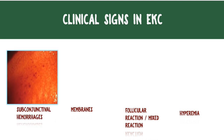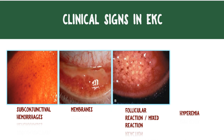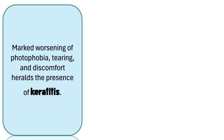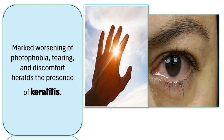The signs seen in EKC include subconjunctival hemorrhages, membranes, and follicular reactions — most often a mixed reaction with both follicles and papillae, mostly in the lower palpebral conjunctiva. EKC is the most dangerous type of viral conjunctivitis because it is not just limited to the conjunctiva — it can spread to the cornea. Marked worsening of photophobia, tearing, and discomfort often herald the onset of keratitis.